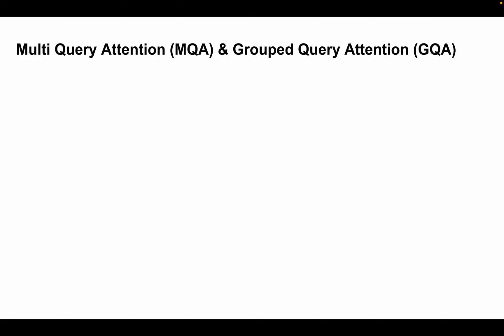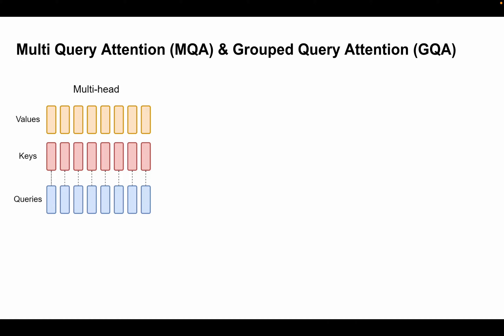Before talking about MQA and GQA, let's recap how a typical multi-head attention works. I know we have covered this in multiple videos, but a quick recap will help in understanding how MQA and GQA work. I'll be showing a couple of images taken from the GQA paper, and I'll be focusing on how a single token flows through this process — not on how heads or layers work together — just to keep things simple.